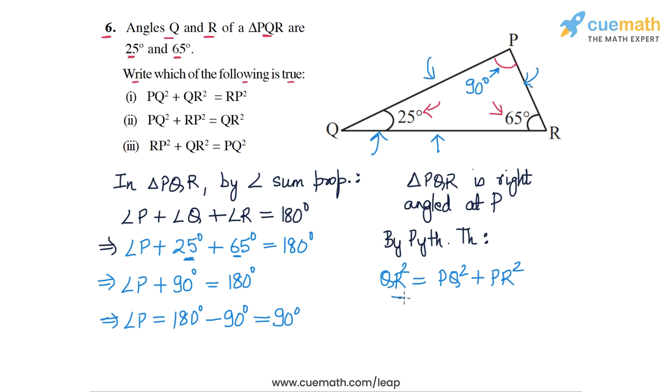And if we compare this with the three relations given to us, the relationship in part two matches what we have written. PQ square plus RP square, which is the same as PR square, is equal to QR square. So the relationship in part two is the correct relationship. And this completes question number six.